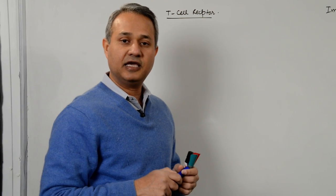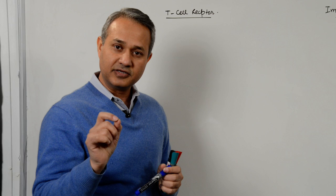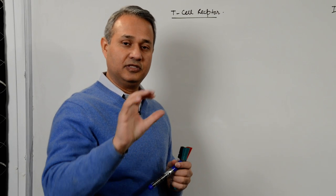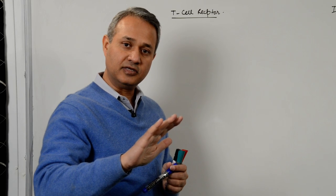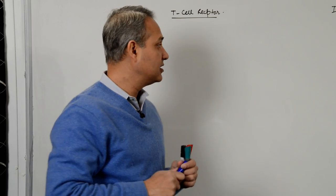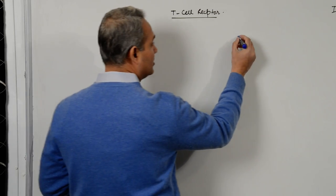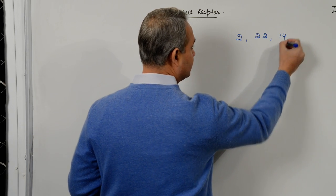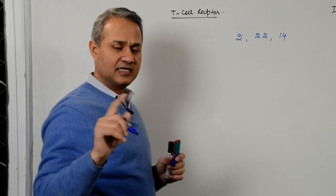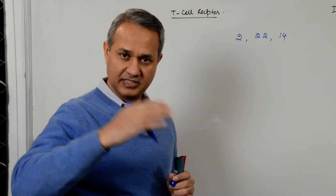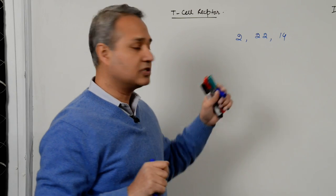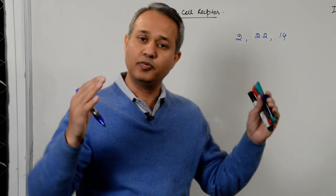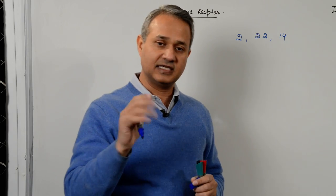The genes that encode the immunoglobulins and T cell receptors are present on chromosomes 2, 22, and 14. These genes are not all present in one place, they are present in various chromosomes. But actually, we don't even say genes, we say pools of genes.